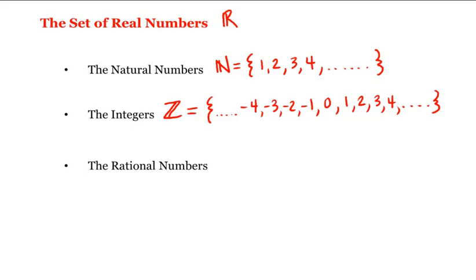The third subset to consider are what we call the rational numbers. And we represent the set of rational numbers by a capital Q. And these are fractions or ratios of integers. So A over B, where B is not 0, and A and B are integers.